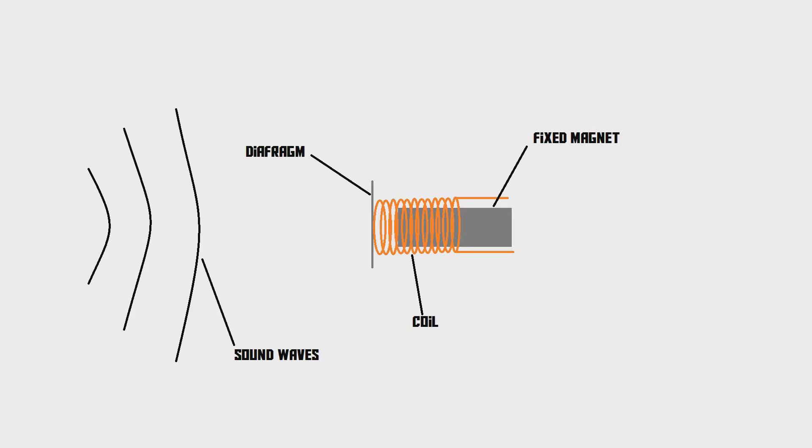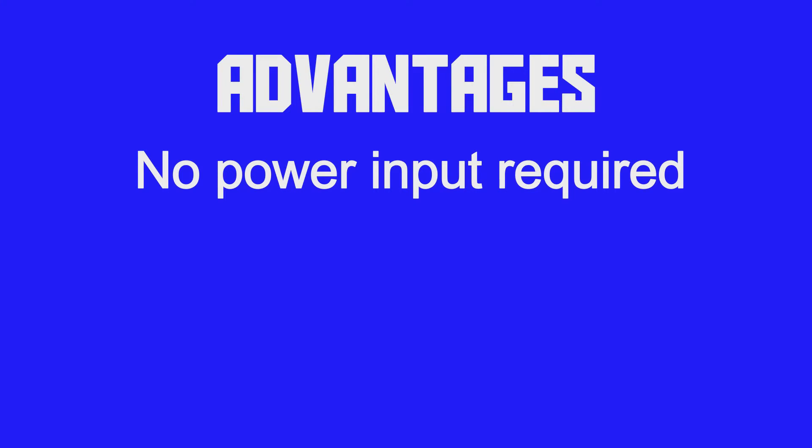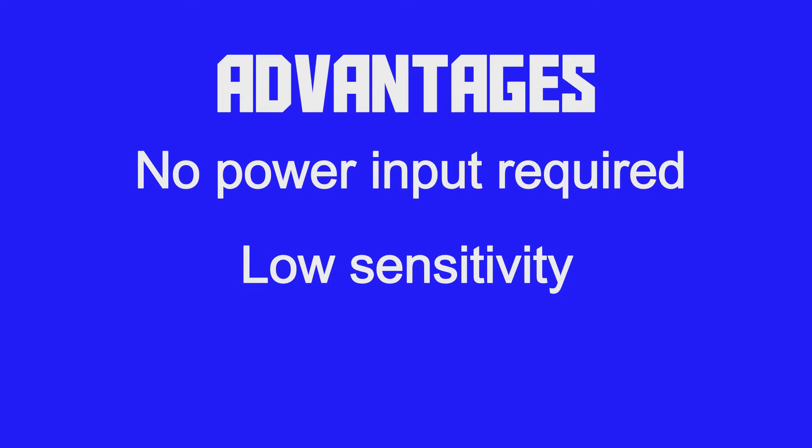Now, there are some disadvantages and advantages of this microphone, starting off with the advantages. Number one, it does not need any power supply, because it generates its own power — when you speak into this microphone, the coil moves and generates its own electricity. Advantage number two, this microphone is not very sensitive, so very loud sounds won't damage it and it won't distort. That's also the reason why it's always used on stage, because people directly singing into a microphone can be a really loud sound.